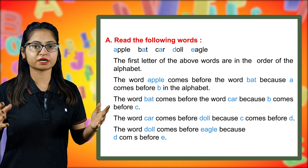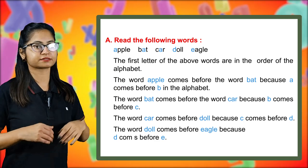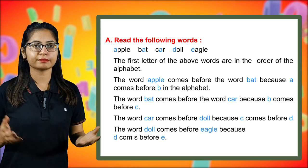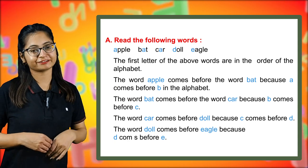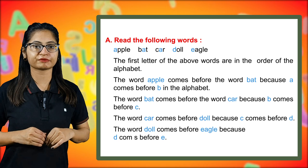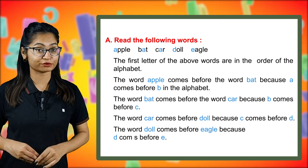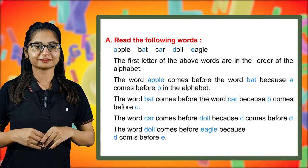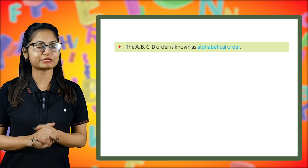The first letter of the above words are in the order of the alphabet. The word apple comes before the word bat because A comes before B in the alphabet. The word bat comes before the word car. The word doll comes before eagle because D comes before E. This A, B, C, D order is known as alphabetical order.